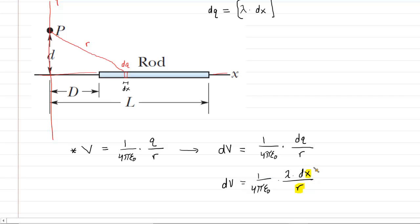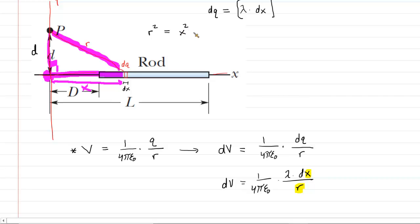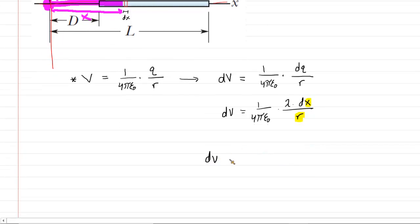We can't proceed with two different variables — we want just a single variable. So we look carefully at the right triangle formed in the diagram. One leg of the triangle is lowercase d, the other leg is x — measured from the origin to the location of our differential element. The hypotenuse is r. From the Pythagorean theorem, r squared equals x squared plus d squared. Taking the square root of both sides, r equals the square root of x squared plus lowercase d squared. We substitute that expression in for r, giving us an expression in terms of just the single variable x.